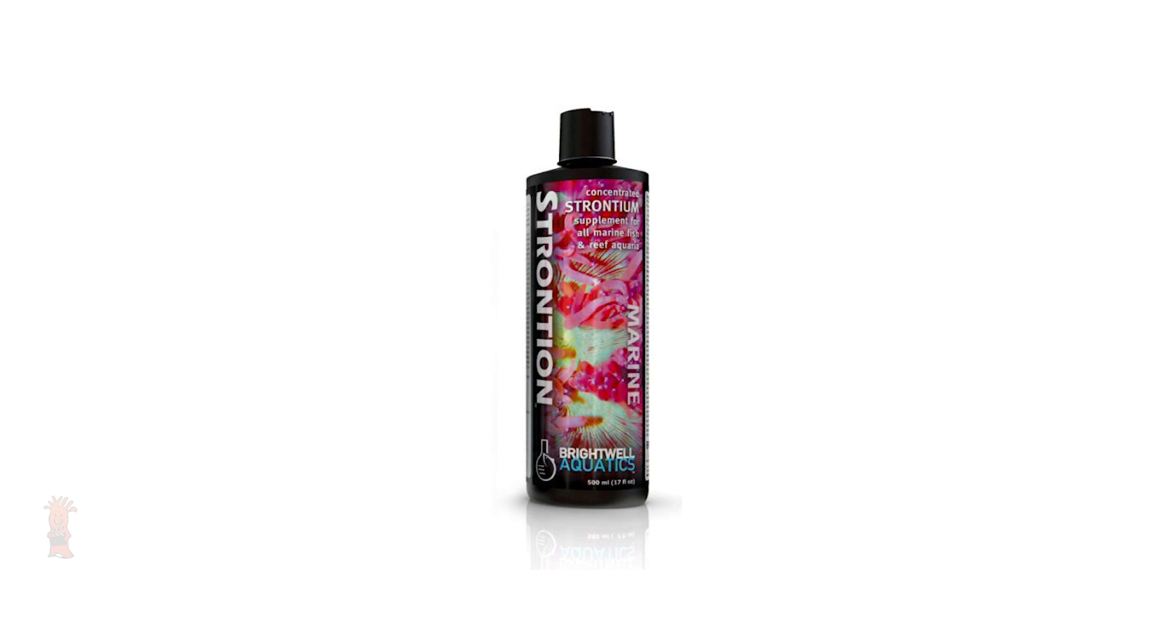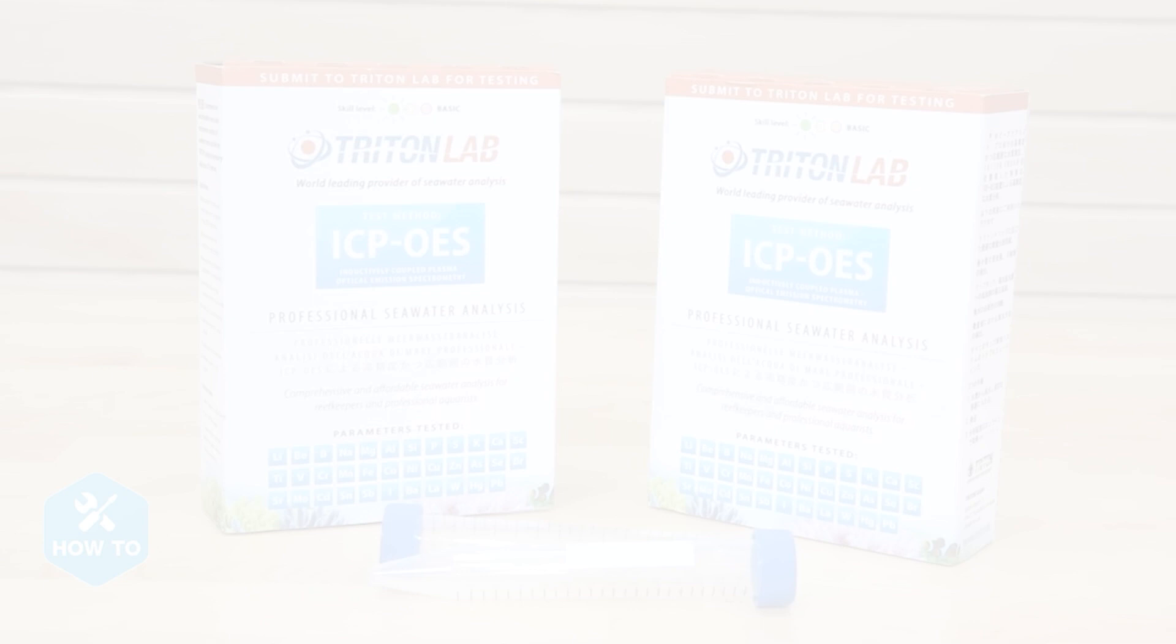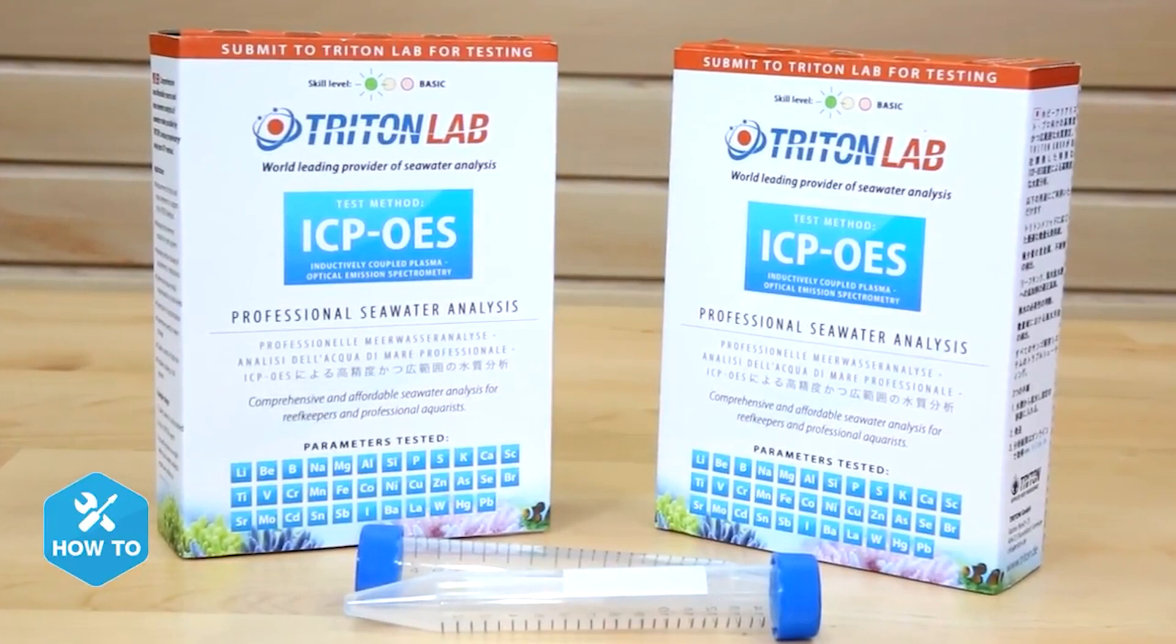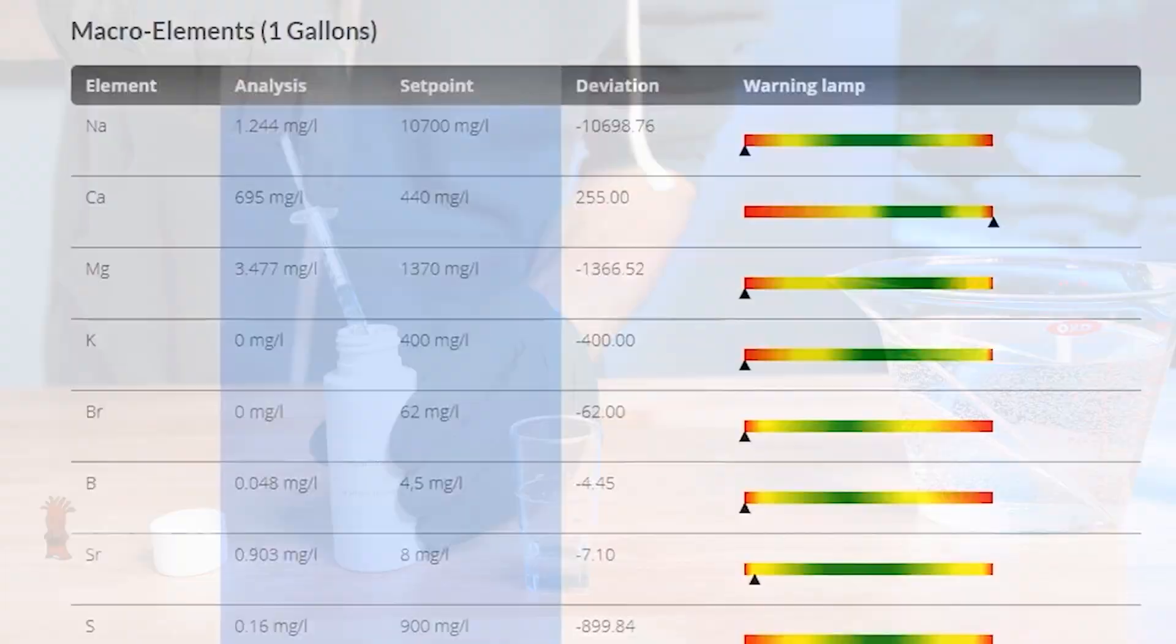Strontium, however, isn't that easy to test for, and there are only a handful of options available to reefers. ICP testing is definitely the easiest, but it isn't the most economical option if you want to test frequently and dose accordingly to keep strontium levels in that natural range of seven to nine parts per million.